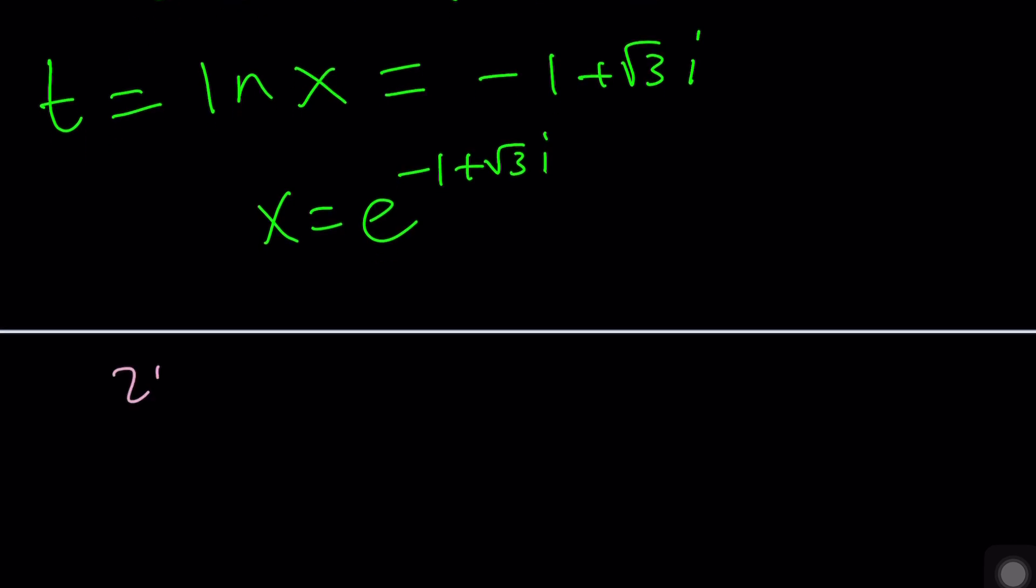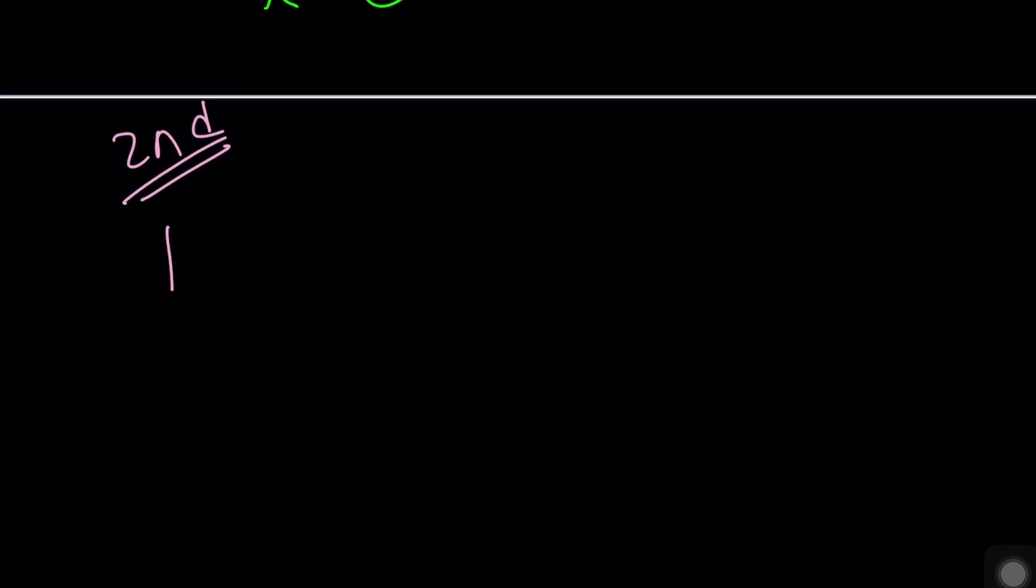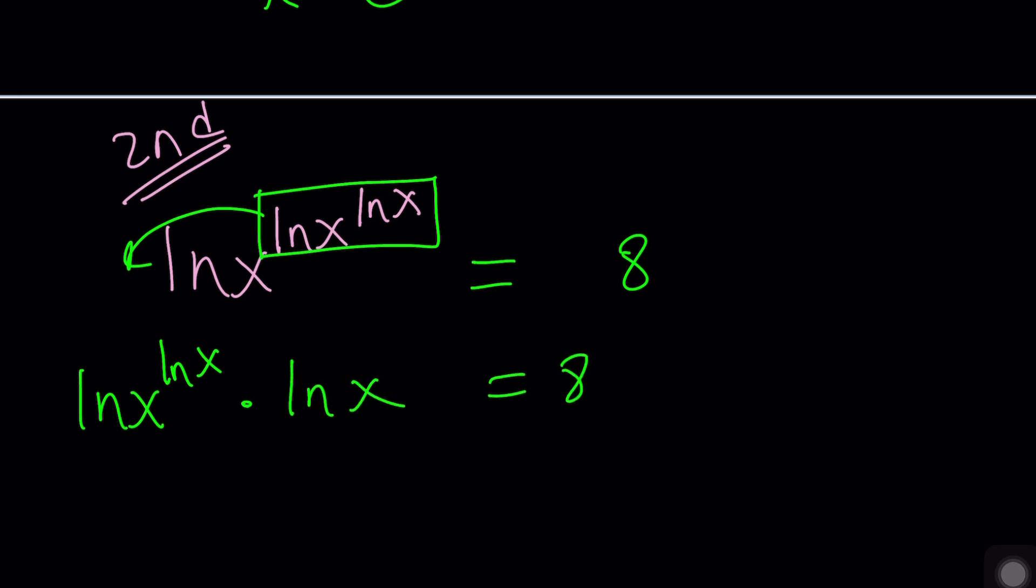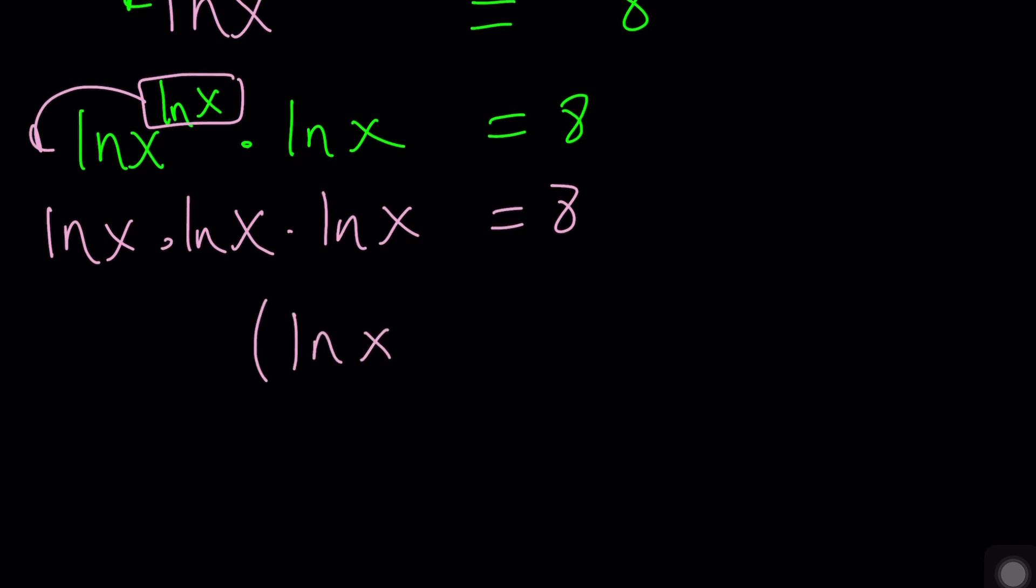Second method is actually a lot easier. That's what usually happens with my second methods. We can go ahead and use the properties of exponents directly. Like what? You can go ahead and bring this to the front. This will become ln(x) to the power ln(x) multiplied by ln(x) equals 8. And then you can do it again, like bring this to the front. That'll be ln(x) times ln(x) times ln(x) equals 8. And then you're going to get ln(x) cubed equals 8. And then you'll get ln(x) equals 2. And finally, x equals e to the second power.